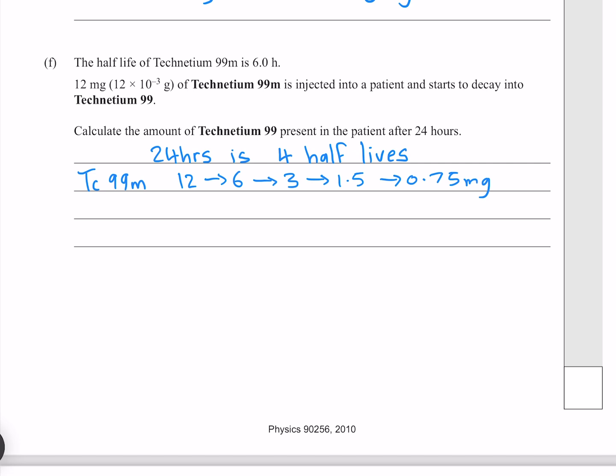and once more to get to 0.75 mg. Now, because we were asked to calculate the amount of technetium-99, not technetium-99m, our amount of technetium-99 is going to be our original starting amount of 12 mg, all of which has decayed into technetium-99, minus the 0.75 mg remaining, which gives us 11.25 mg.